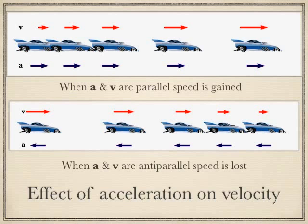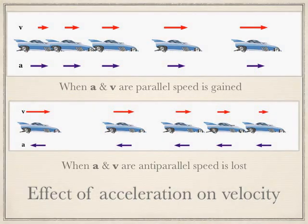When acceleration and velocity point in the opposite direction, or anti-parallel, this indicates that speed is being lost. The velocity could be negative and the acceleration could be positive, and it would still be slowing. As long as the acceleration and velocity vectors are in opposing directions or anti-parallel, something is slowing down.